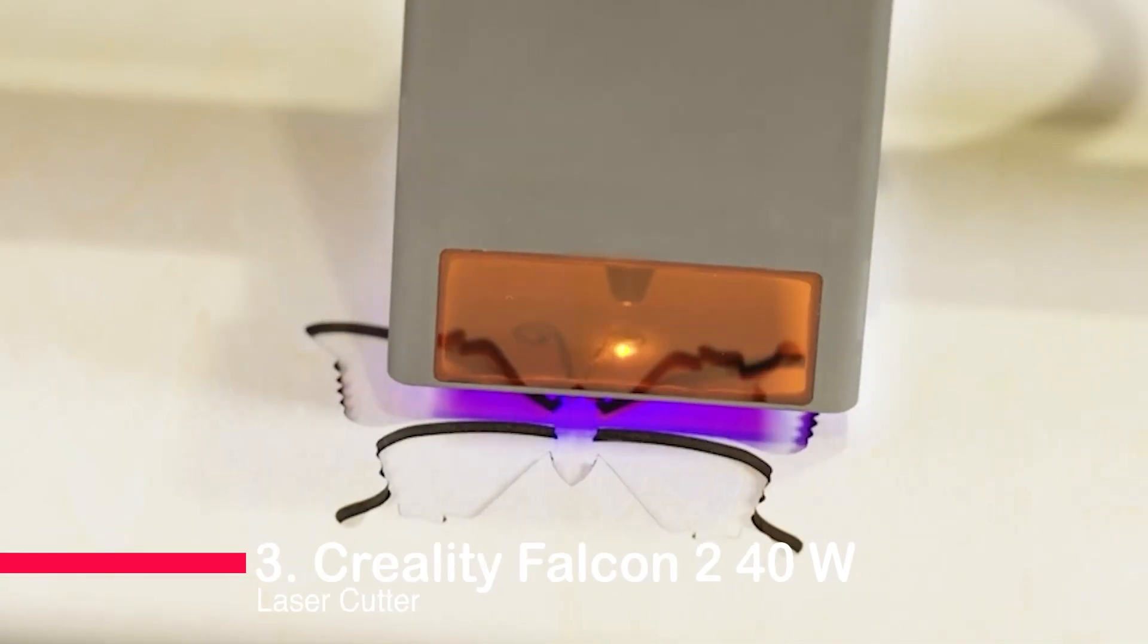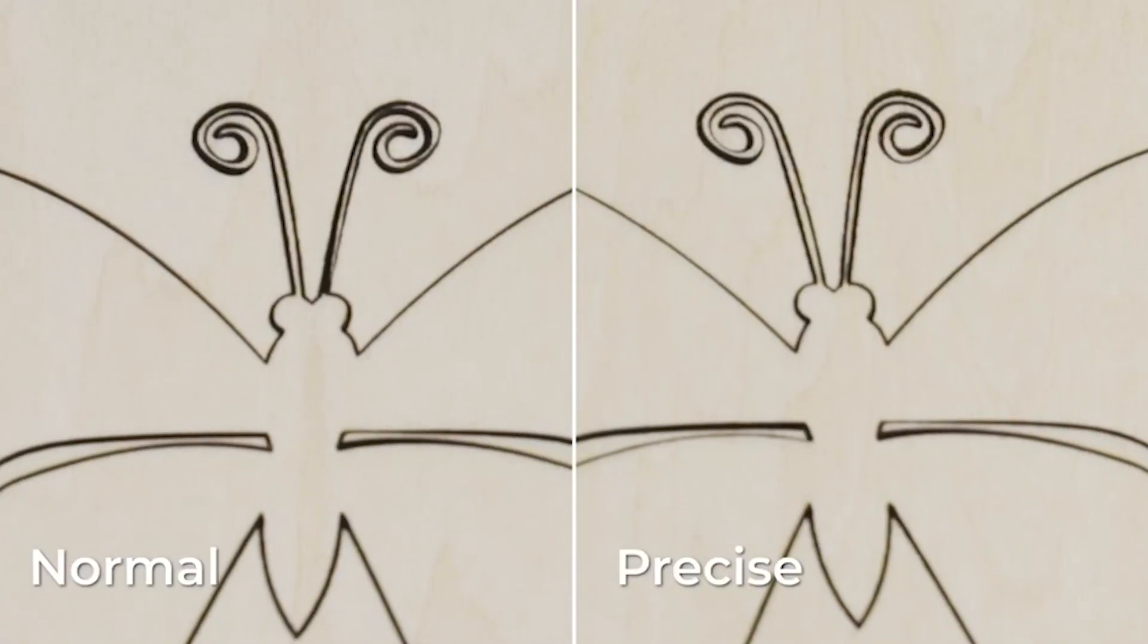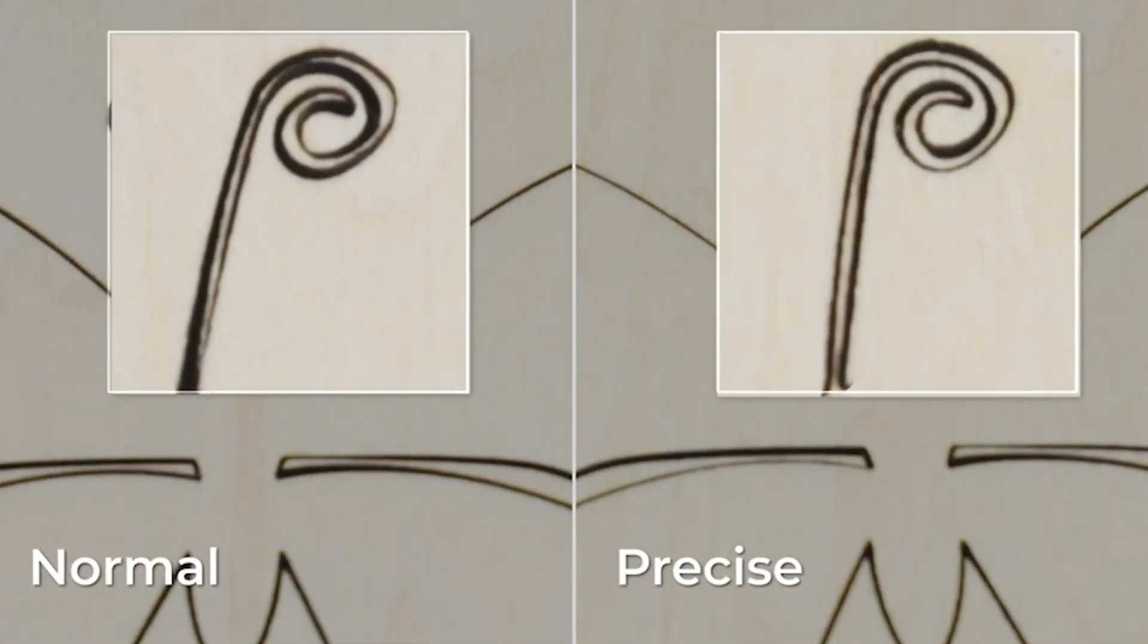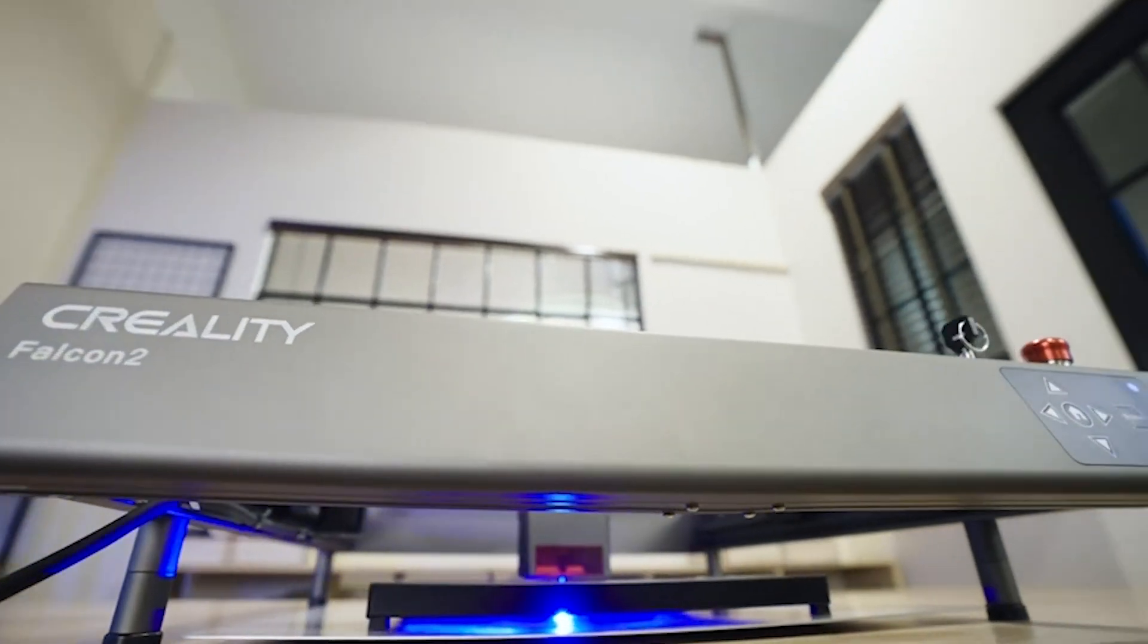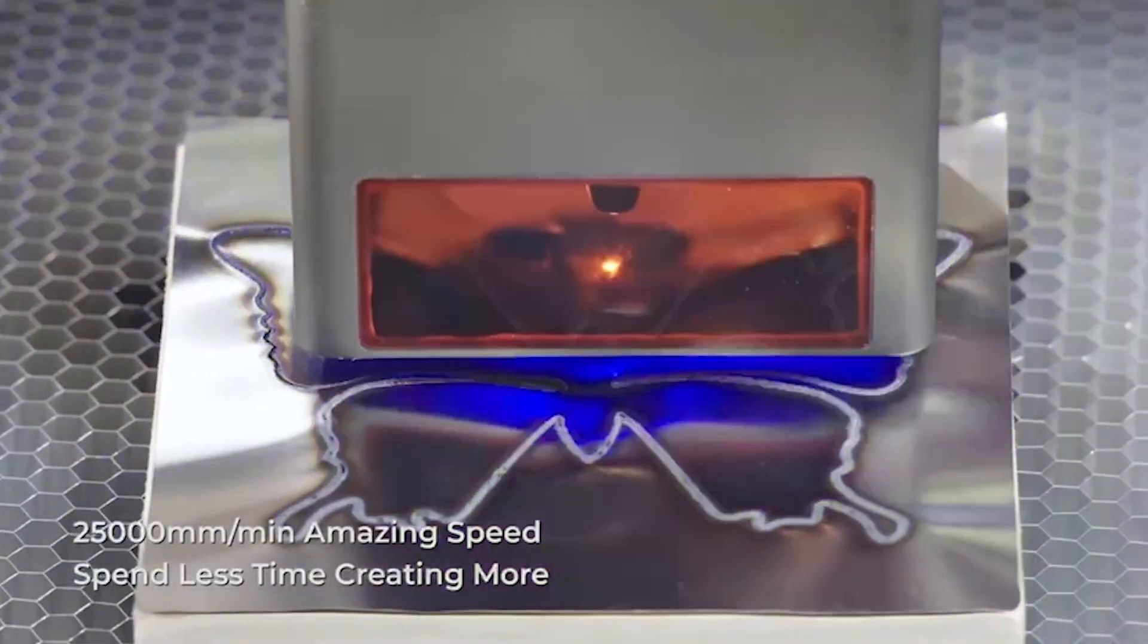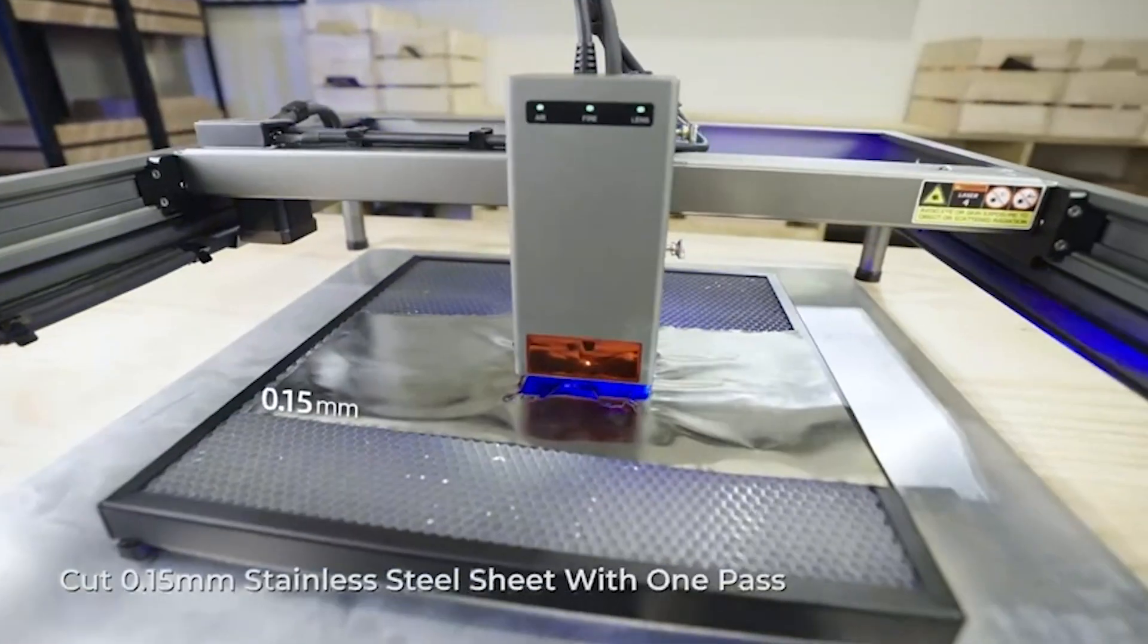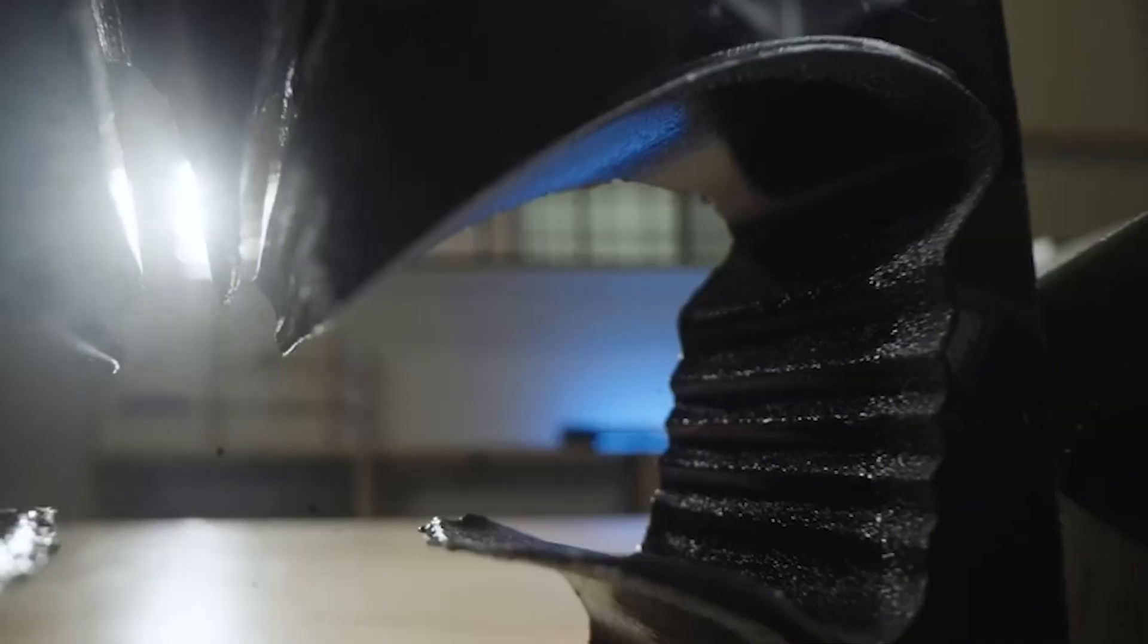Number three, Creality Falcon 2 40 Watt Laser Cutter. Meet the Creality Falcon 2, a game-changing 40-watt laser cutter. This beast uses advanced FAC spot compression technology, boasting 40W of power to tackle wood, acrylic, and even thin metal with ease. Its adjustable light spot ensures precision, while integrated air assist keeps your work clean.